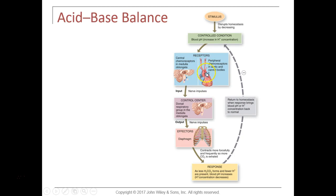In urine, hydrogen binds to ammonia to form NH4+, called ammonium ion — an irreversible binding lost in urine. Monohydrogen phosphate combines with hydrogen to form dihydrogen phosphate, also irreversible, and that acid is lost in urine bound to dihydrogen phosphate. A table summarizes the various mechanisms for regulating blood pH: the protein buffer systems, the carbonic acid-bicarbonate system, and the kidneys and lungs.